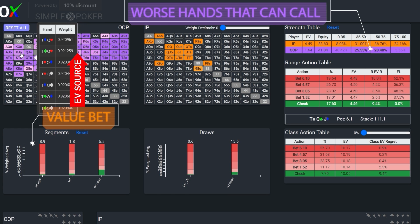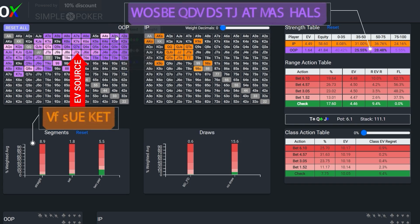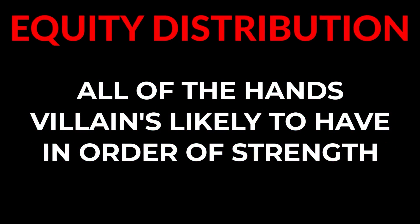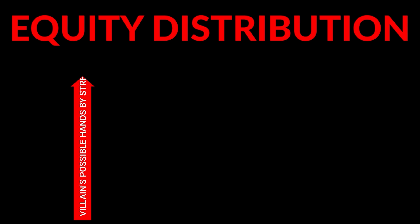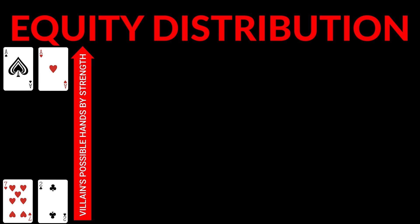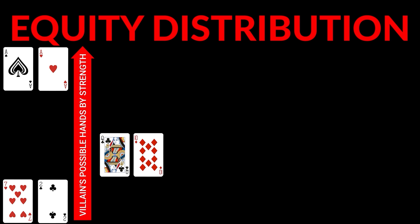Let's begin by discussing the first step of the Mesoanalysis: assessing where our hand ranks against our opponent's equity distribution. An equity distribution is simply the dispersion of all of the hands a player is likely to have at a given spot. We can visualize an equity distribution as a vertical spectrum, with the bottom representing the worst hand villain is likely to have, and the top representing the best. Our objective, when trying to define which class our hand belongs to, is to accurately assess where our hand stacks up against this spectrum.